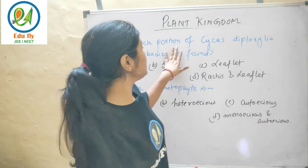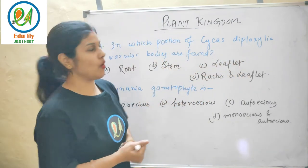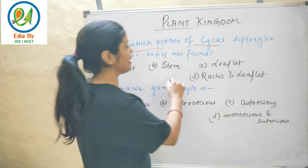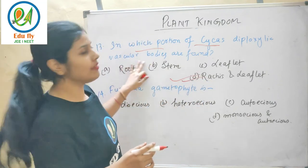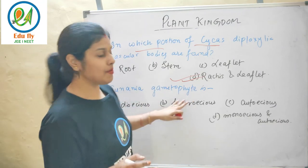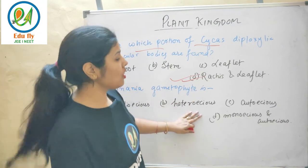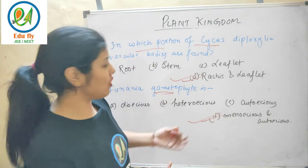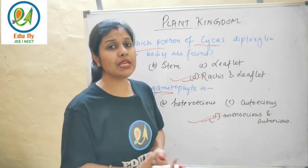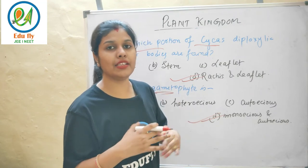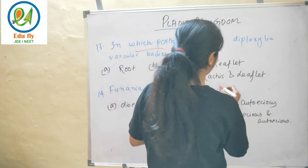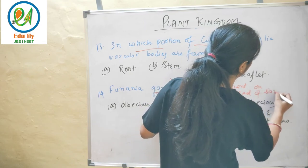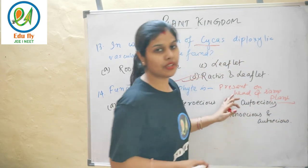In Cycas, the mucilaginous vascular bodies are found in the stem, rachis, and leaflets. Cycas is dioecious — meaning male and female organs are on different plants. Male microsporophylls and female megasporophylls are borne on separate plants.